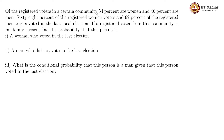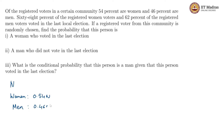Of the registered voters in a certain community, 54 percent are women and 46 percent are men. Let us say there are n registered voters total. So 54 percent are women, which means the women are 0.54n, and the remaining 46 percent are men, so men are 0.46n.